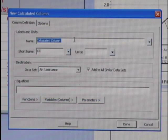I can go to the data menu and choose New Calculated Column. In this dialog, I see fields for a name, units, and also the equation field, and that's where the real magic happens. That's where I define the new column.